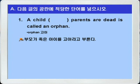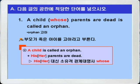블랭크 다음에 무관사명사 parents가 있으니까 정답은 소유격인 whose를 쓰면 되겠습니다. A child whose parents are dead is called an orphan. 이렇게 되는 것이죠.